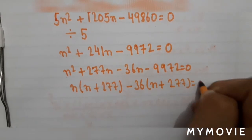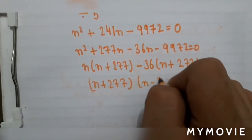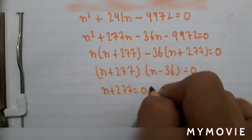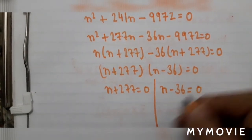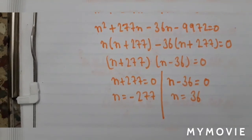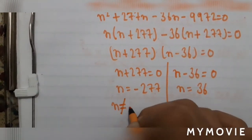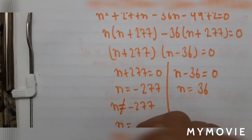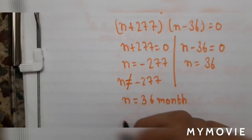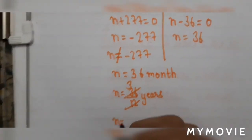So (n + 277)(n − 36) = 0. Either n + 277 = 0, giving n = −277, or n − 36 = 0, giving n = 36. Since months cannot be negative, n = 36 months. Now convert to years: 36 ÷ 12 = 3. So n equals 3 years.